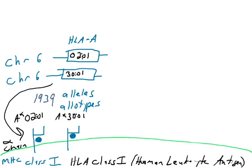What we've covered in this video is the fact that there are many different alleles of the HLA-A gene — over 1900. The purpose of having all these alleles is to make different allotypes, hopefully with different peptide binding motifs. Having different peptide binding motifs increases the possibility of getting a T cell to recognize an infection. In the next video, we'll make things more complicated — it turns out we can make even more versions of these MHC class 1 molecules.